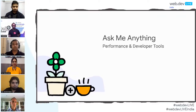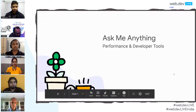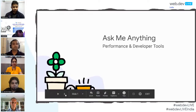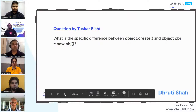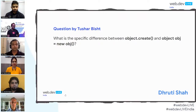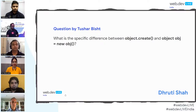Hello everyone, welcome to the AMA session. We have some great questions from the YouTube live chat. Let's go ahead and see the first question. The first question is by Tushar, and the question is: what is the specific difference between object.create and object equals to new object?